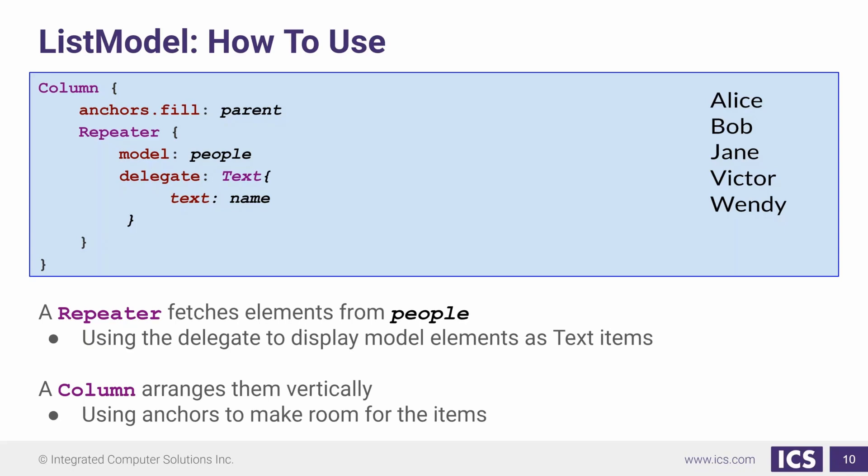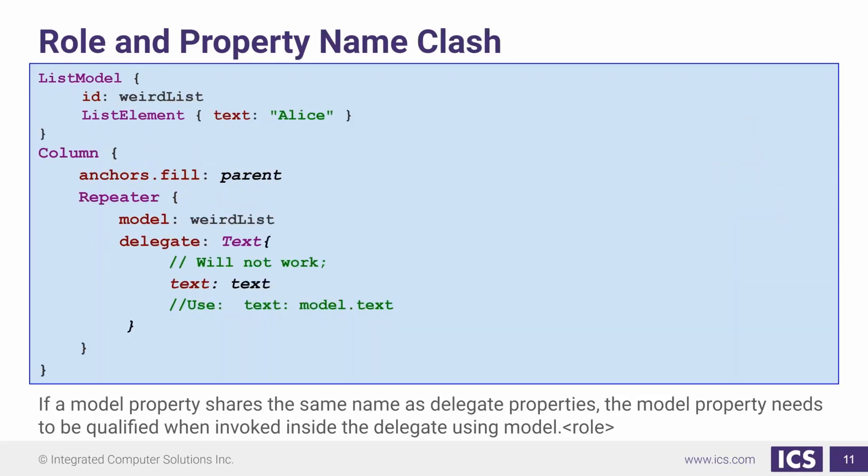So when we display this, we're going to get a column layout, much like you see on the right side here. We can also use model.name for the text property, and this is a good idea to do. The reason is it prevents any collision — if we have a list model whose property is named text, or any other property that our object could have, it won't work because it will try to use the property from the object. So in order to make that a non-issue, it's good practice to always use model.name.